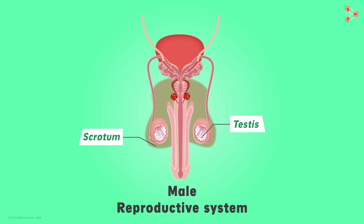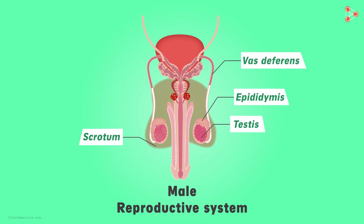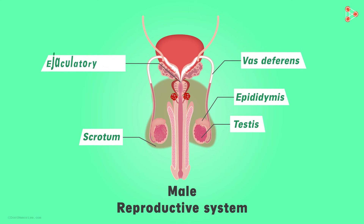The scrotum is the pouch which contains the testis. Now the sperms produced will have to travel in order to reach the female body. This responsibility is taken up by the mass of coils that we can see here. This is called the epididymis, and the pair is called the epididymides. The mass then carries the sperms to a single connecting long coil called the vas deferens. From there, they are carried into the ejaculatory ducts.